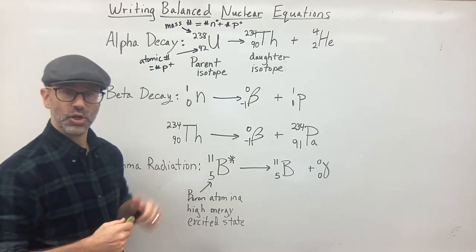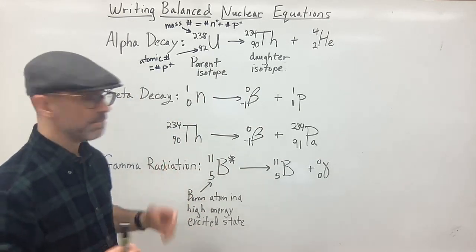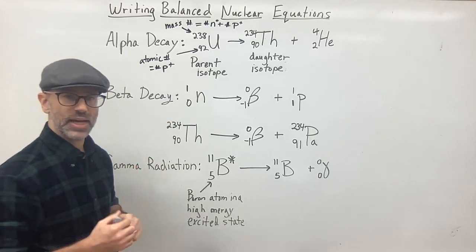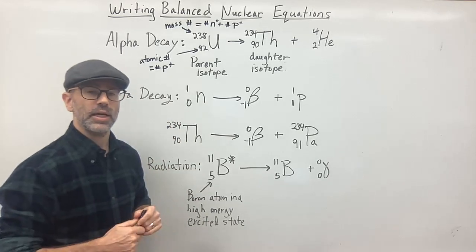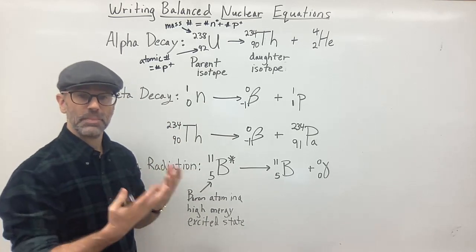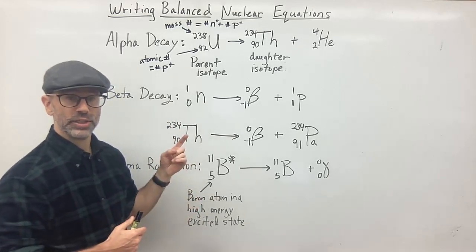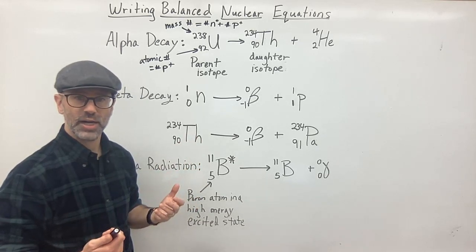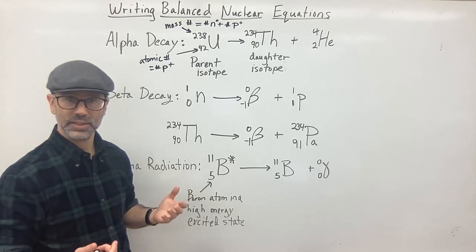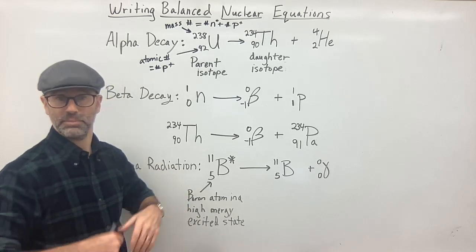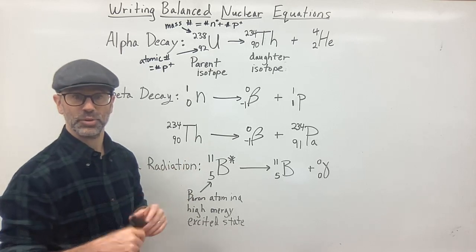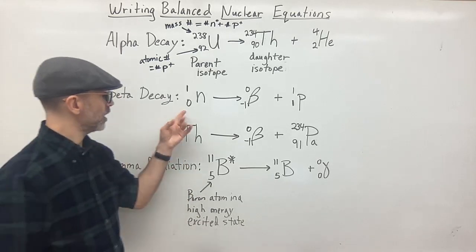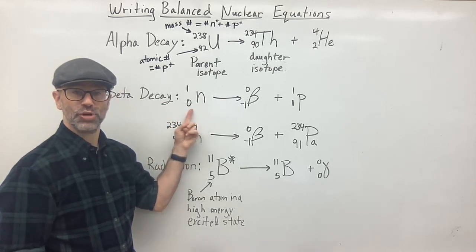Now let's go on to beta decay. In beta decay, a beta particle is released from the nucleus. The beta particle is essentially a negative electron. It comes from the nucleus — but where does this electron come from? It comes from a neutron in the nucleus.